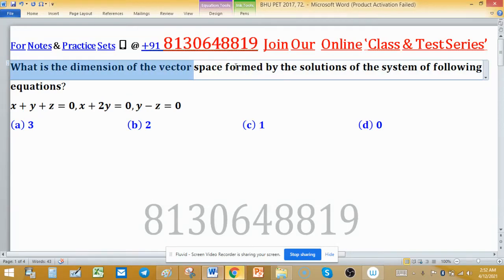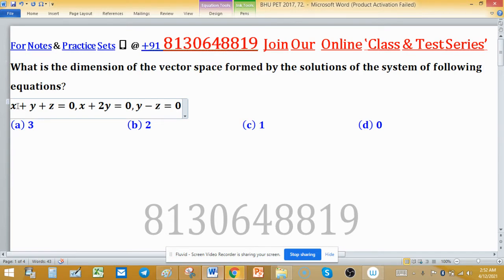What is the dimension of the vector space formed by the solution of the system of the following equations? This is the system of equations: x + y + z = 0, x + 2y = 0.